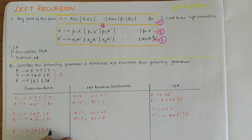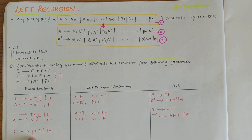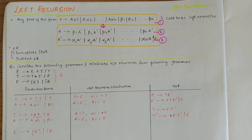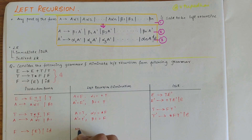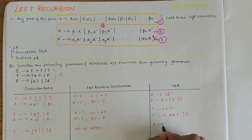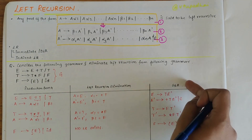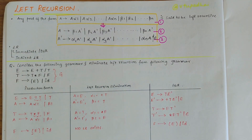Moving on to the third production: F derives parenthesized-E and id. Looking at the first symbol here, it is a terminal. If the first symbol is a terminal, then no left recursion exists, so we can write this same production as it is.